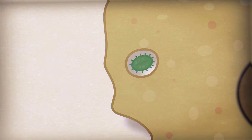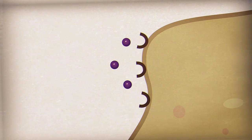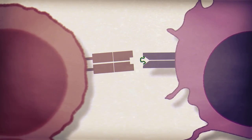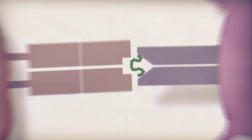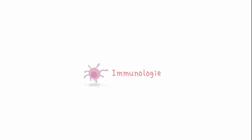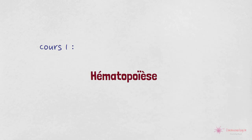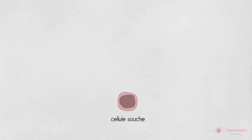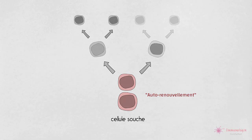Hello, everyone. L'hématopoïèse. Les cellules souches sont définies par deux capacités : la capacité de se régénérer ou de s'autorenouveler, et la capacité de se différencier en différents types de cellules.